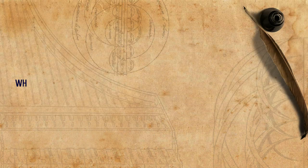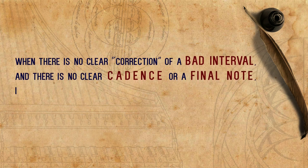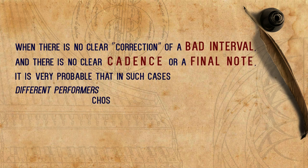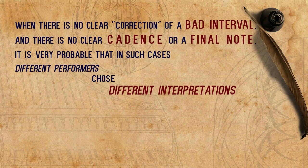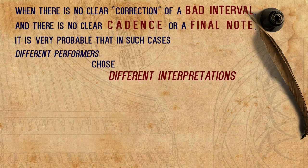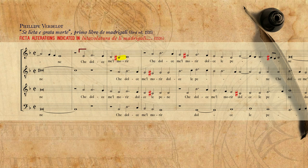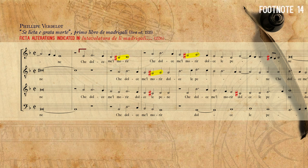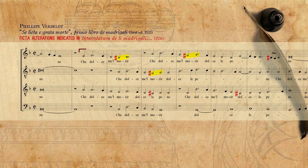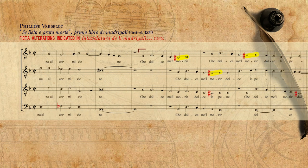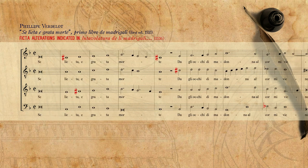Whether this is what Verdelot, the composer of the piece, exactly intended, or whether it is an exhibition of highly individual and possibly extreme tastes on the part of the intabulator, we cannot really say. When there is no clear correction of a bad interval, and there is no clear cadence or final note, it is very probable that in such cases different performers chose different interpretations. One could claim that this might be another tool for the performer to interpret the text — one can add or avoid beauty fictas accordingly. In this case, the harsh mis of the ficta come very consistently on the word morir, an appropriate connection in Renaissance terms. However, I don't know of a source that refers to ficta as a tool for artistic interpretation. Regardless, one may learn a lot about ficta from such intabulations of vocal music, as it is a true window to the elusive past of ficta.